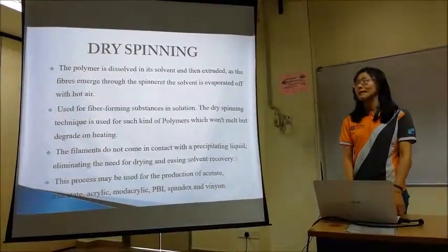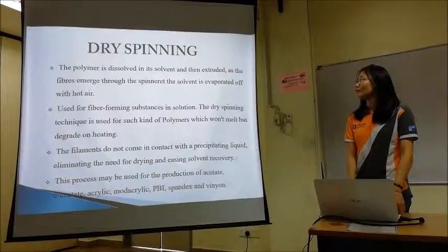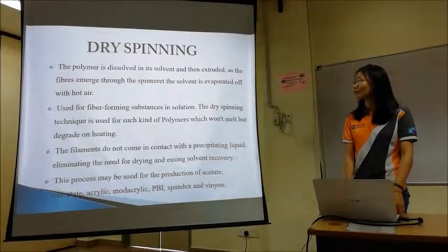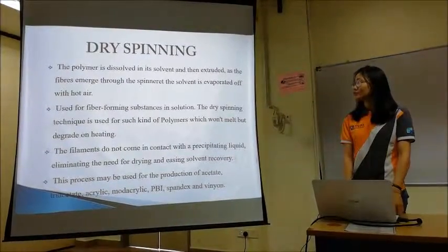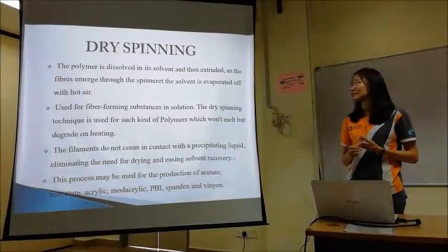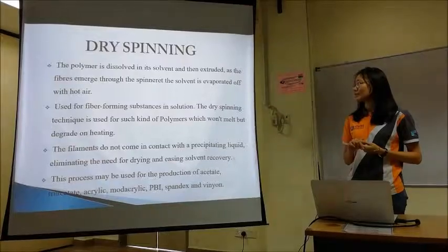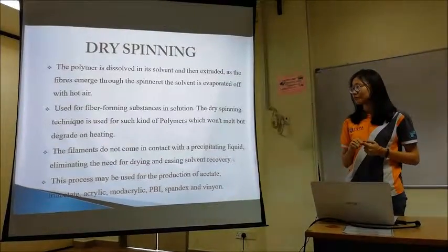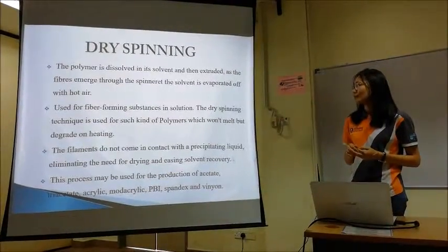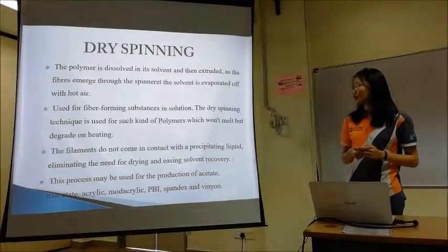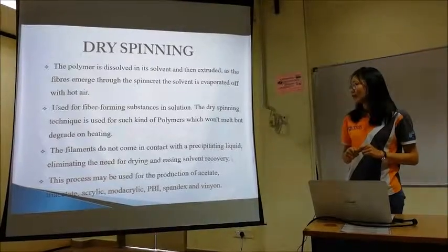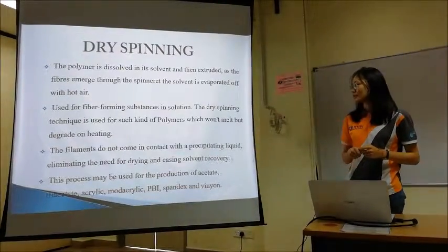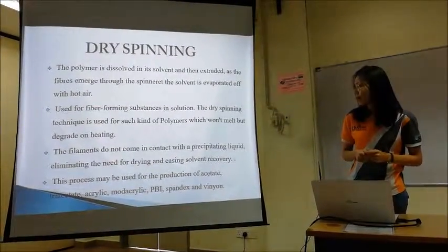Next is dry spinning. The polymer is dissolved in a solvent and then extruded. As the fibre emerges through the spinneret, the solvent is evaporated off with hot air. Dry spinning is used for fibre-forming substances in solution, and this technique is used for polymers which cannot be melted but would degrade on heating. The filaments do not come into contact with a precipitating liquid, eliminating the need for drying and easing solvent recovery. This process may be used for the production of acetate, PBI, and so on.